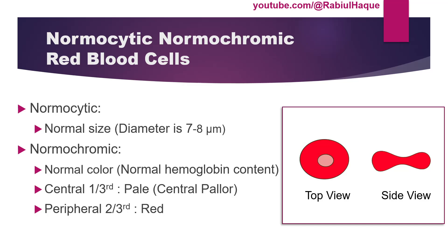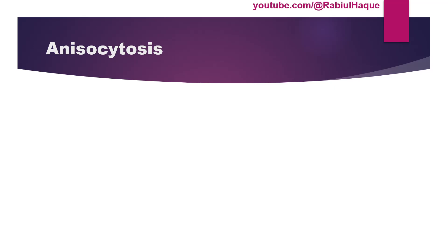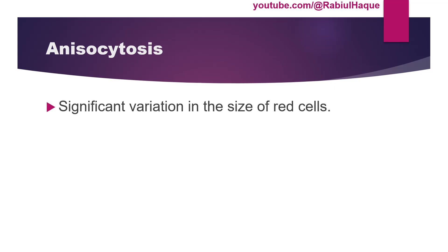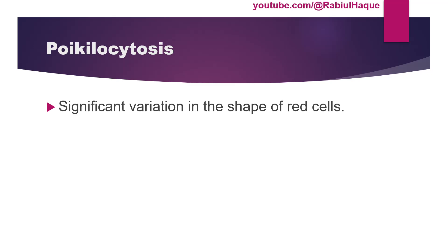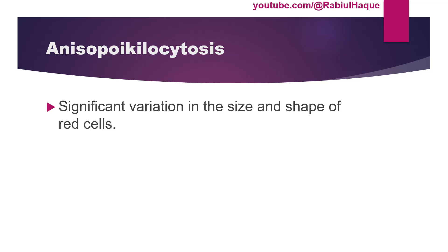Another term used during examination of peripheral blood smear is anisocytosis, which means significant variation in the size of red blood cells. Another term is poikilocytosis, which means significant variation in the shape of red blood cells. When both occur together we say anisopoikilocytosis. Always remember these terms are non-specific and we will often see them in a variety of anemias.